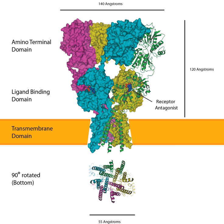AMPARs are composed of four types of subunits, designated as GluA-1 (GriA-1), GluA-2 (GriA-2), GluA-3 (GriA-3), and GluA-4 (alternatively called GluRA-D, GriA-4), which combine to form tetramers. Most AMPARs are heterotetrameric, consisting of a symmetric dimer of dimers of GluA-2 and either GluA-1, GluA-3, or GluA-4.